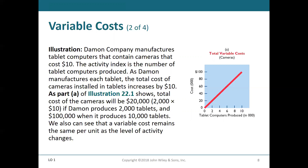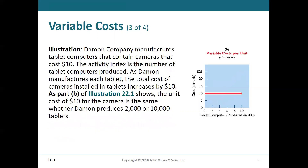The cost of the cameras goes up by $10 per tablet. So if cameras cost $20,000, that would be 2,000 units at $10 each. If we produce 10,000 tablets, the cost would be $100,000. The variable cost is exactly the same per unit — $10 per unit. Damon Corporation is making cameras that cost $10, and the activity index is the number of tablet computers produced, so the total cost of cameras increases by $10 for each tablet.